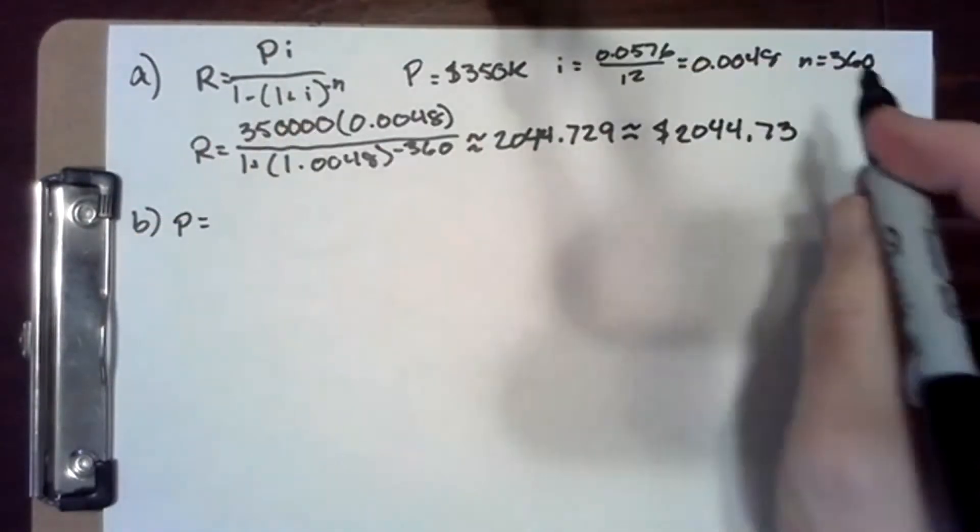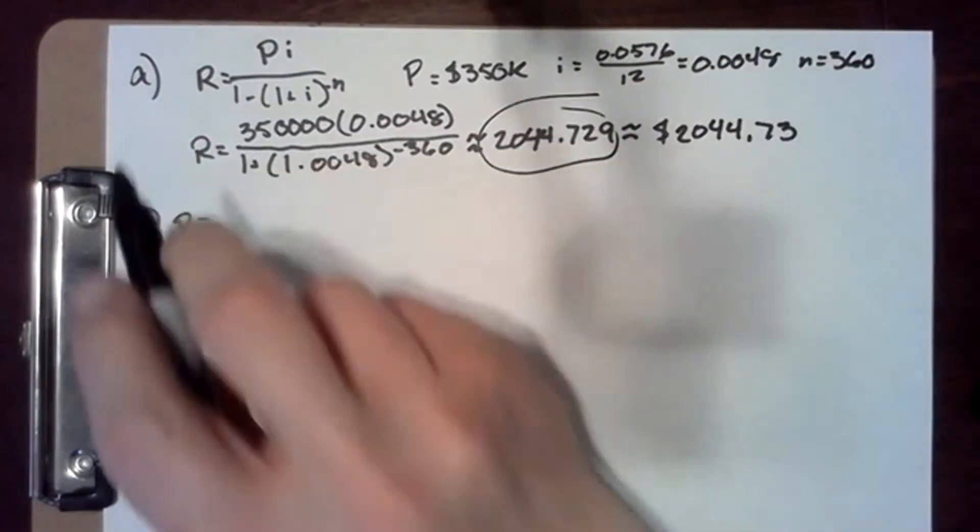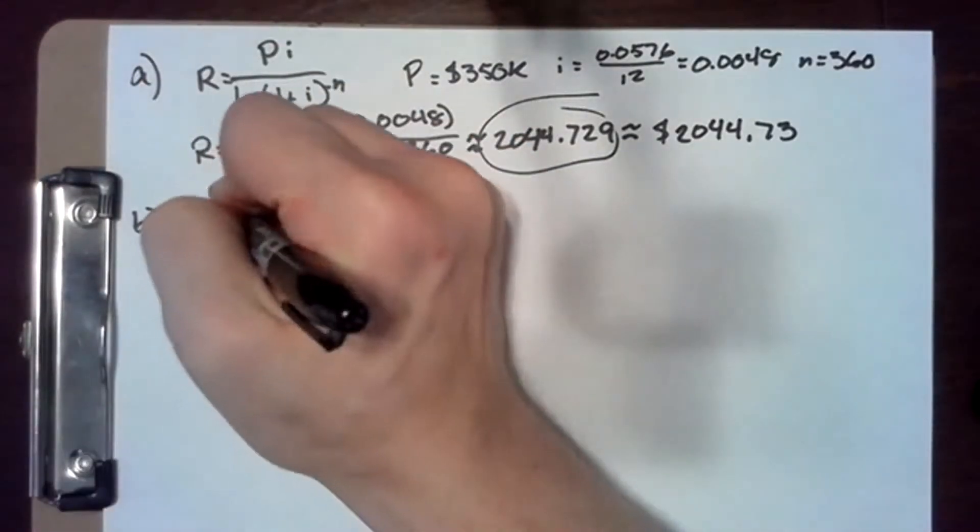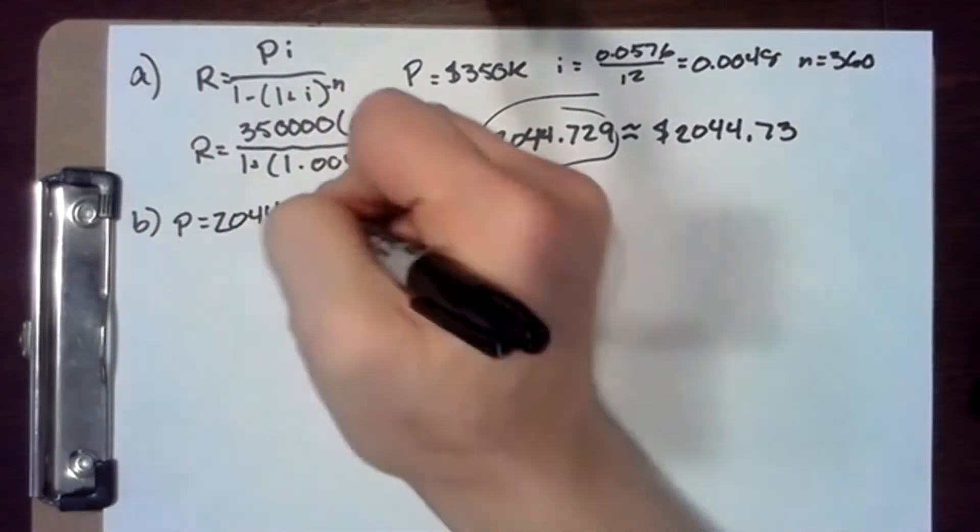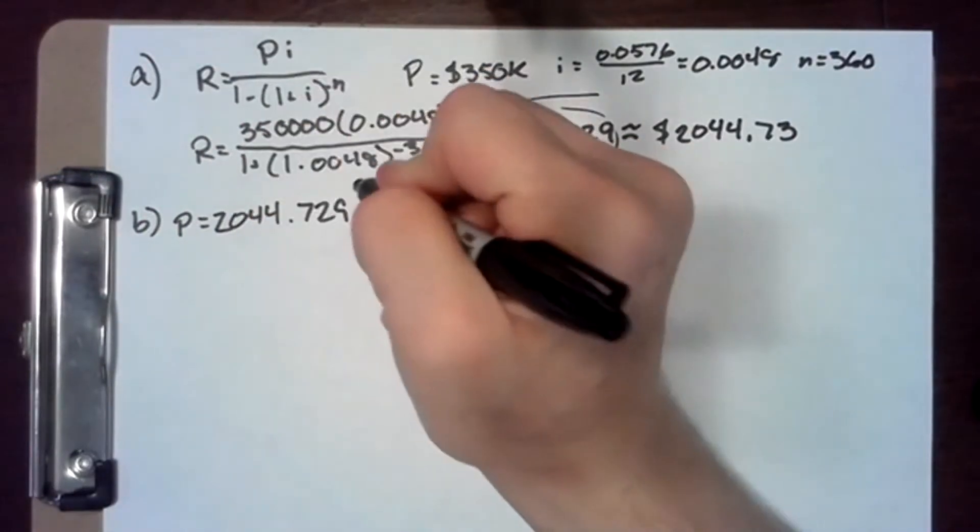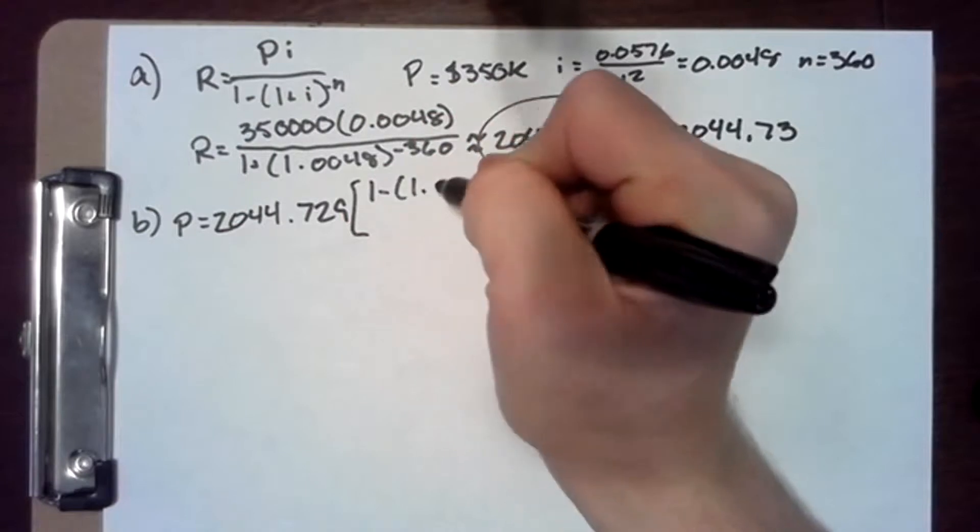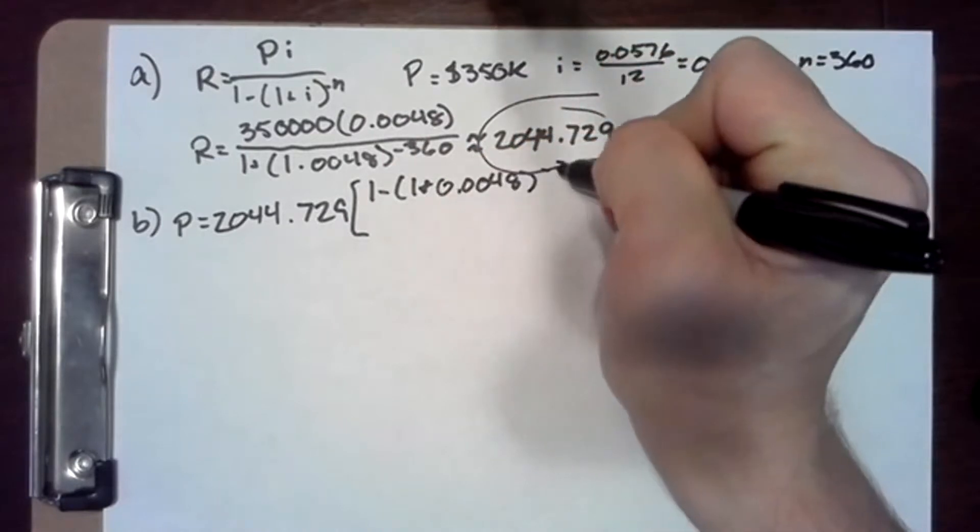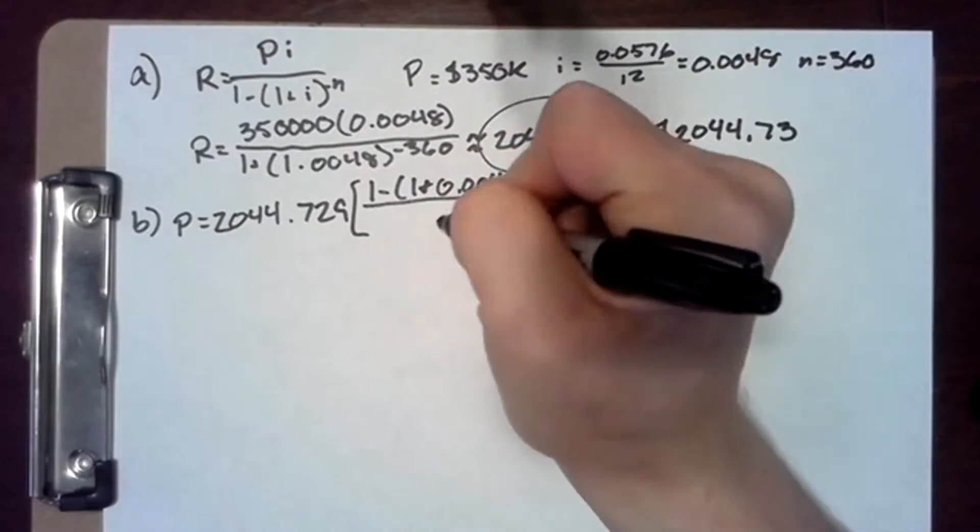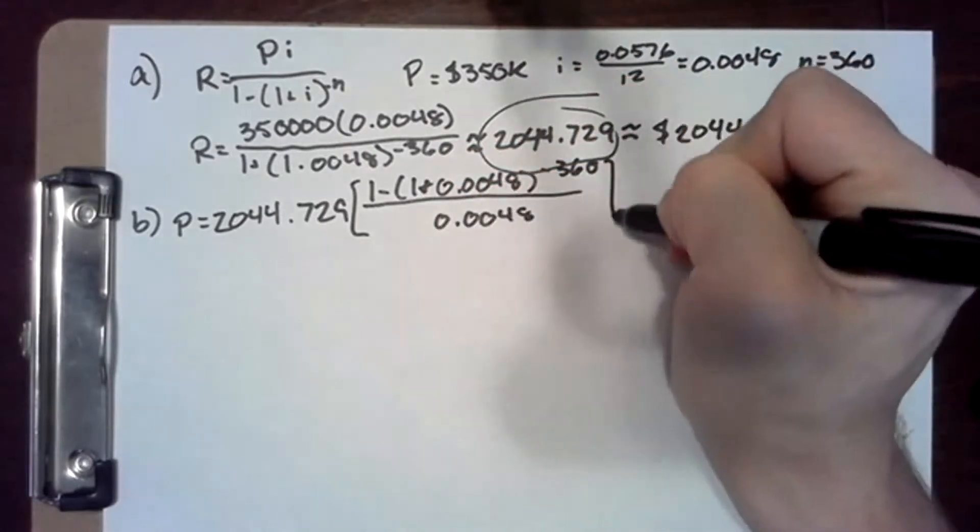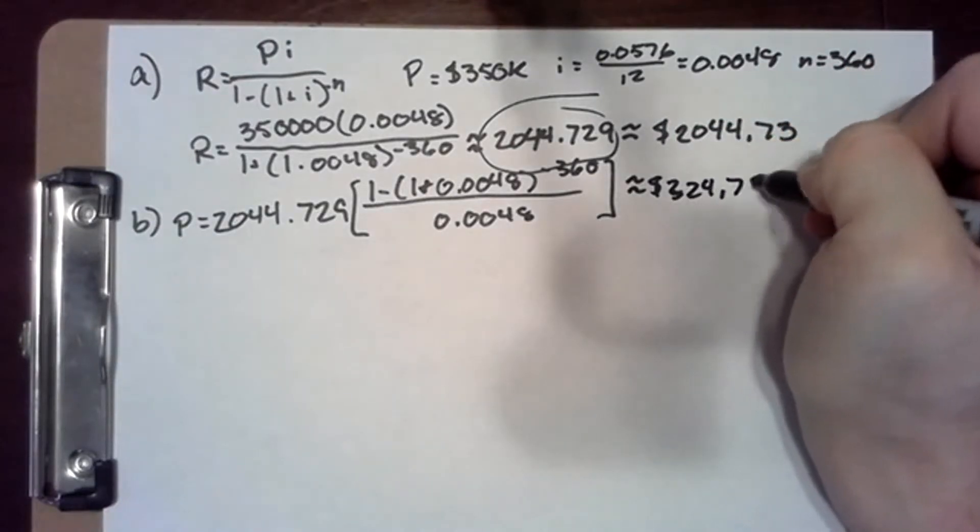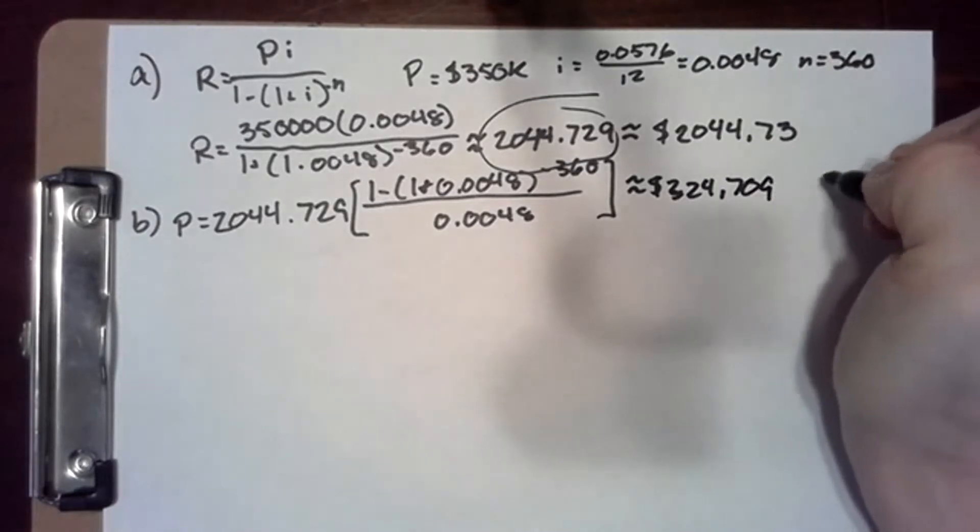P equals, we use our monthly payment from the previous period, 2044.729, times one minus one plus 0.0048 to the negative 360, over 0.0048. This is our annuity formula. Which comes out to approximately $324,709.19.